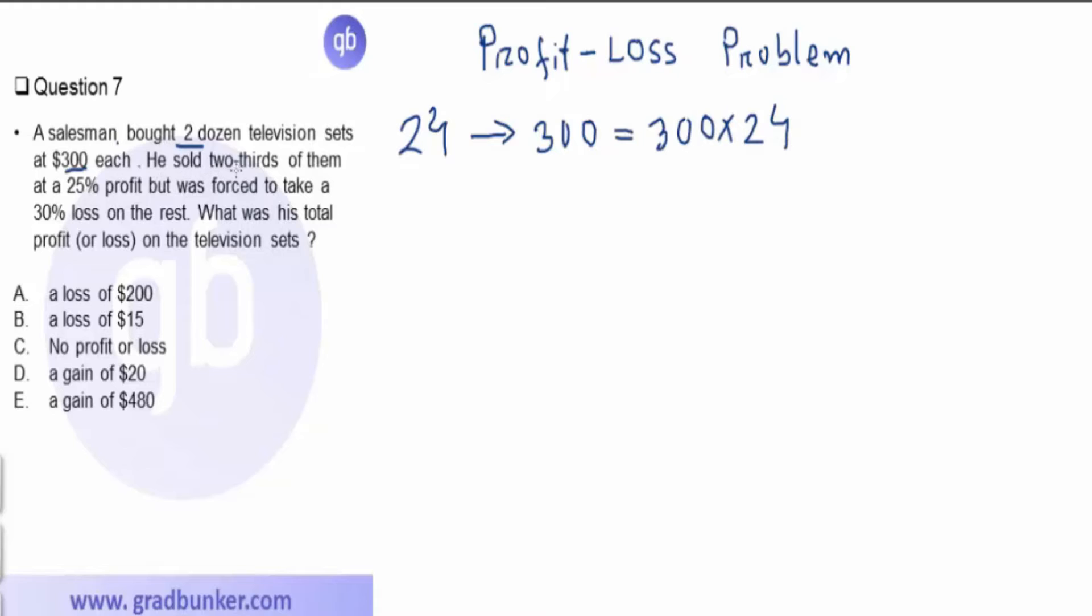Second, he sold two thirds of them. Two thirds of 24, that means 16. So when he sold two thirds at 25 percent profit, 300 multiplied by 1.25.